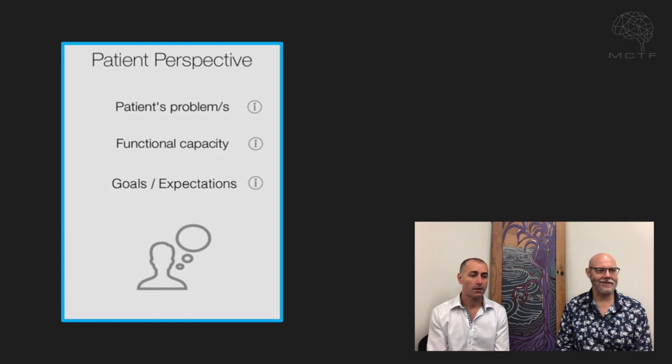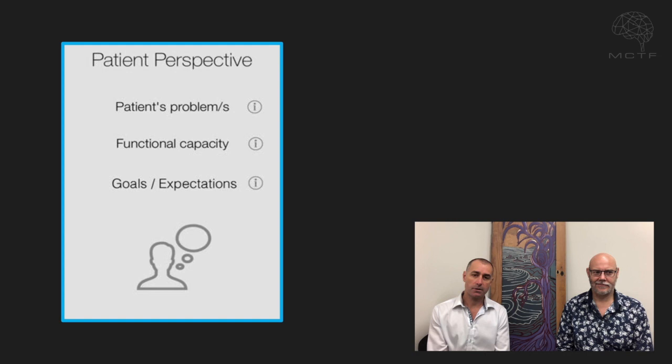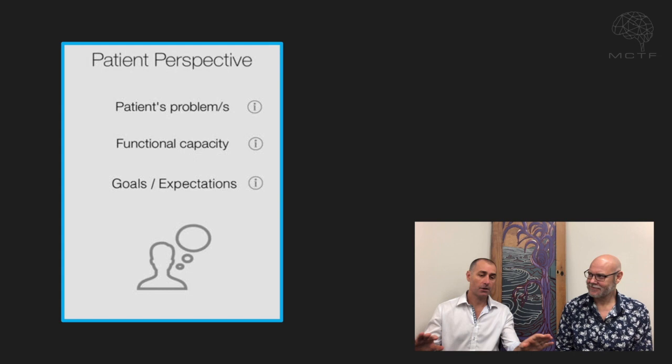They all blend together, but broadly we need to understand the person's perspective. Considering that from a functional angle is very important because most people come in not because they have pain, but because they have pain that limits them from doing something — whether that's sleeping, sports, work, exercise, or doing things with their family. And then goals and expectations is vital, because what we think this person might want versus what their actual goal is may not be related to each other.